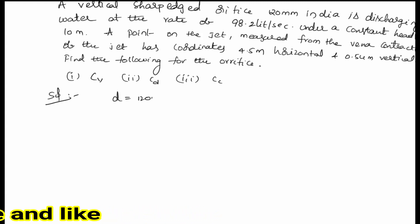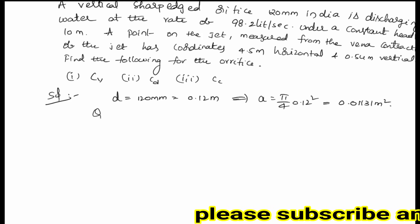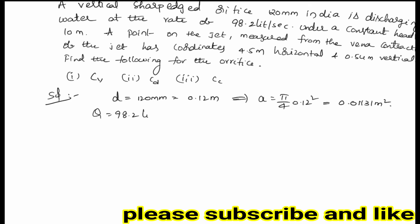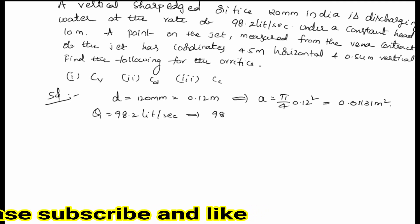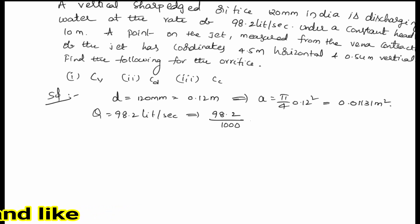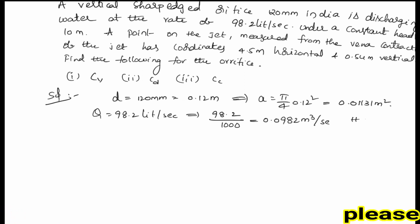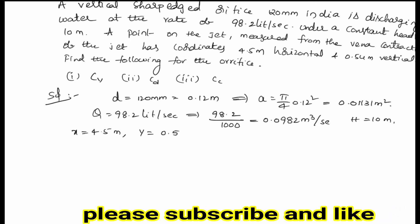Let's solve the problem. Diameter is equal to 120 mm, that means 0.12 meters. From this, area equals pi by 4 times 0.12 squared, which gives us 0.01131 square meters. Discharge Q is given as 98.2 liters per second. Converting to cubic meters per second: since 1 cubic meter equals 1000 liters, 98.2 divided by 1000 gives 0.0982 cubic meters per second. H is given as 10 meters. The horizontal distance x equals 4.5 meters and vertical distance y equals 0.54 meters.